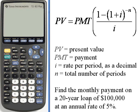So let's try this problem. This says find the monthly payment on a 20-year loan of $100,000 at an annual rate of 5%. Okay, so we're going to do this in the calculator.